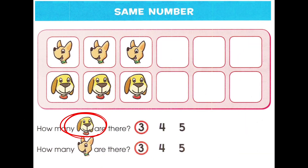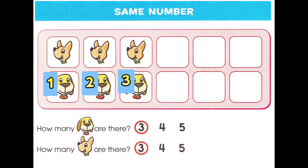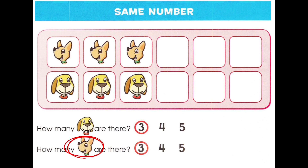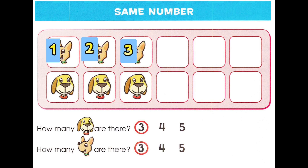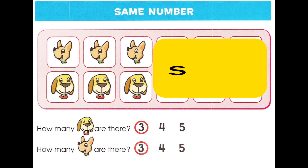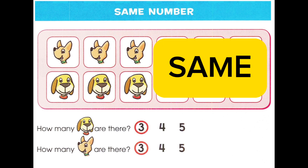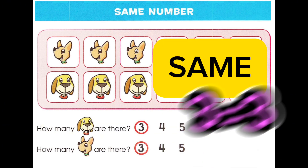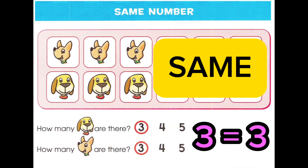How many big dogs are there? One, two, three. How many little dogs are there? One, two, three. It's the same. Same number.